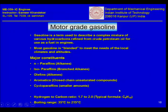Motor grade gasoline, or what we call petrol, is a term used to describe a complex mixture of various hydrocarbons refined from crude petroleum oil for use as a fuel in engines. Most gasolines are blended in the refineries to meet the needs of local climates and altitudes, so depending on the conditions under which the fuel is going to be used, a certain amount of blending is required.